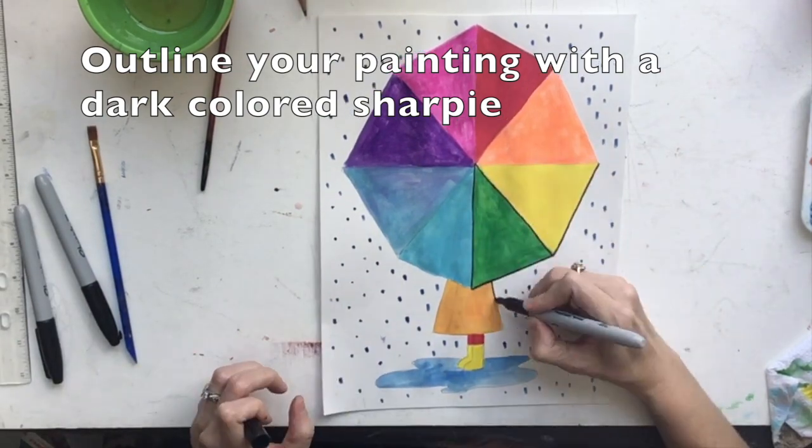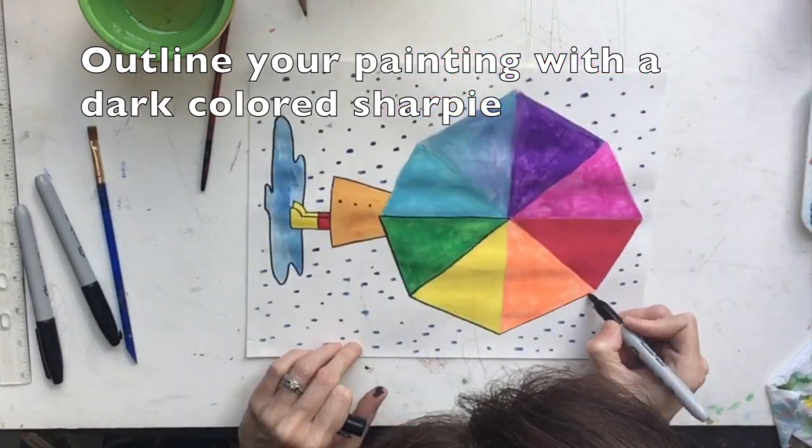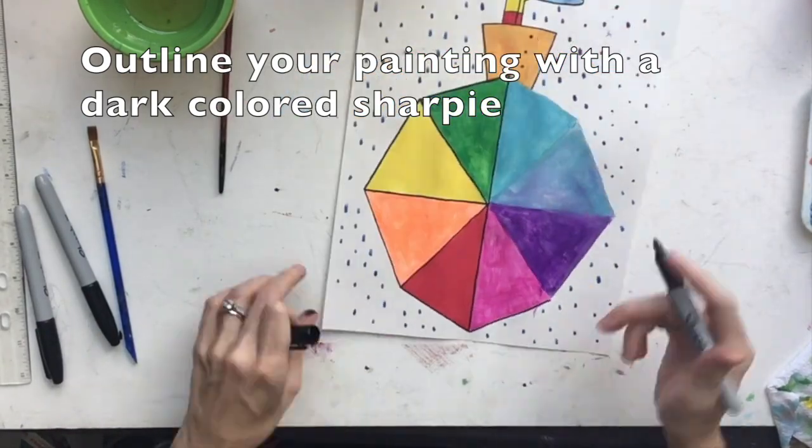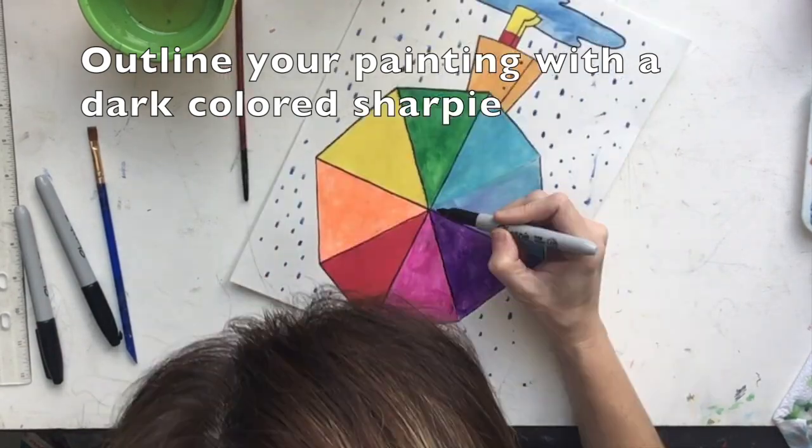And our very last step is that we are going to outline all of our painting with a dark colored Sharpie. And this makes it look really nice and finished, like a professional.